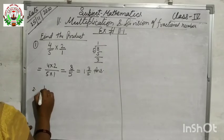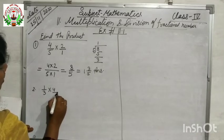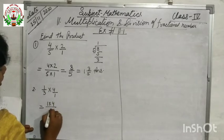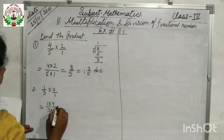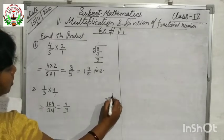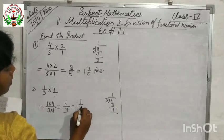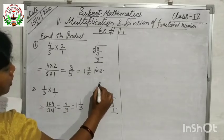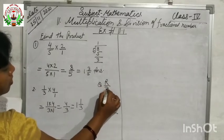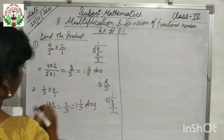Question number 2 is 1/3 into 4. Here 4 is again a whole number, so we write it as 4/1. We multiply numerator with numerator and denominator with denominator: 4 over 3. Convert to mixed fraction: 3 goes into 4 once, remainder 1. The answer is 1 and 1/3. Remember the formula: quotient, remainder, and divisor.